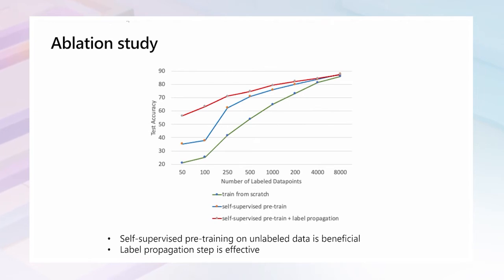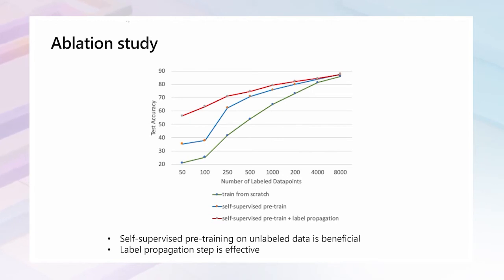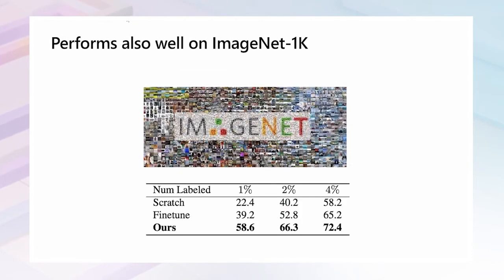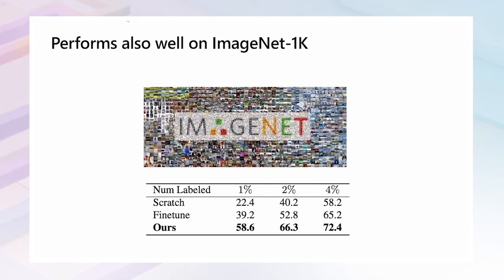We conduct an ablation study for these two key designs. The green curve shows results of training from scratch. The blue curve shows results using self-supervised pre-training — with an absolute 15% improvement when the number of labeled images is as small as 500. The red curve shows results with further label propagation, giving another absolute 20% improvement when labeled images are as few as 100. It also performs strongly on ImageNet with 1% labeled images per category, improving top-5 accuracy by more than an absolute 35%.